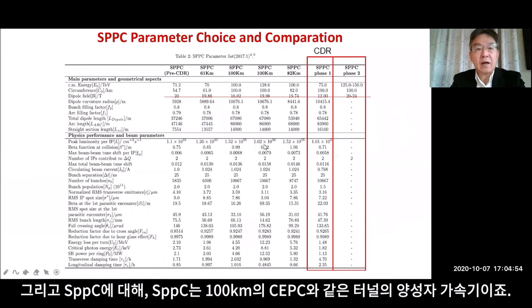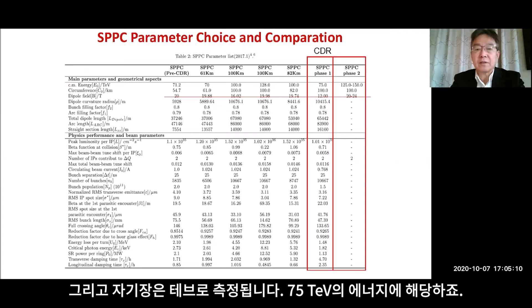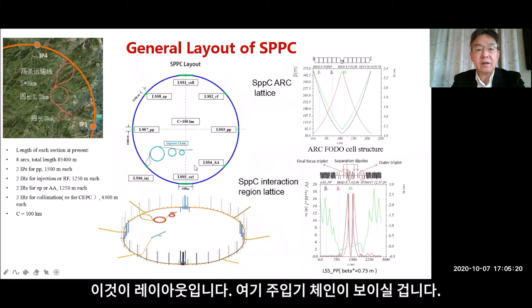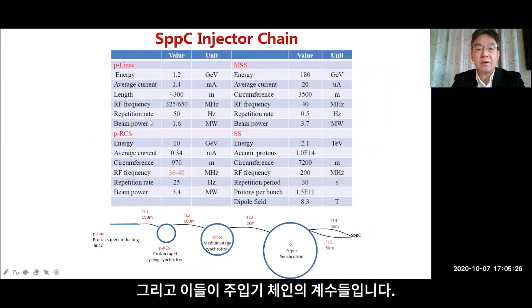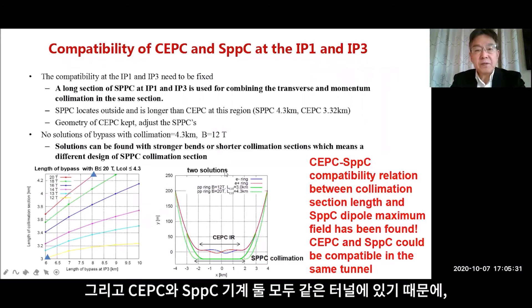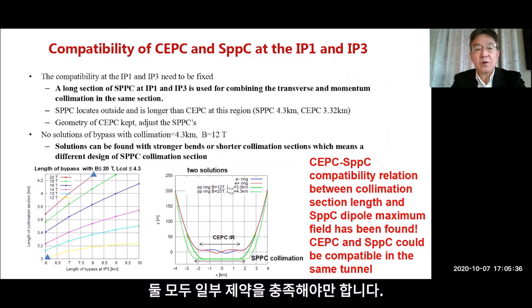Regarding SPPC: it is a proton-proton collider of 100 kilometers in the same tunnel as CEPC. The magnetic field strength is 12 tesla, corresponding to 75 TeV energy. You can see the layout with the injector chain — three rings, a linac, and these are the parameters of the injector chain.